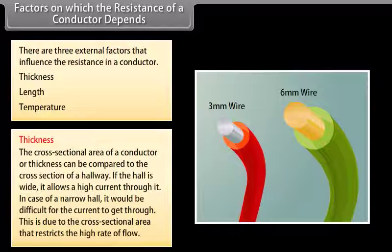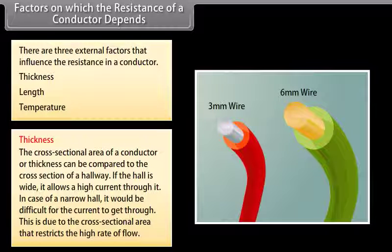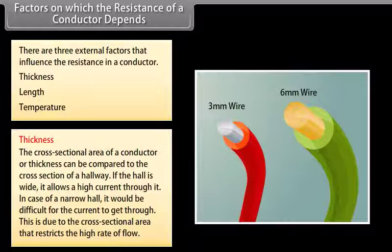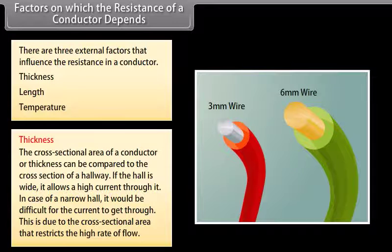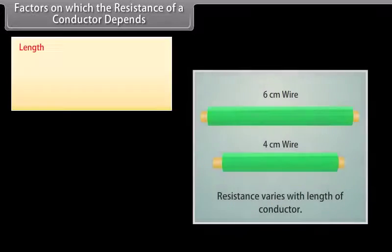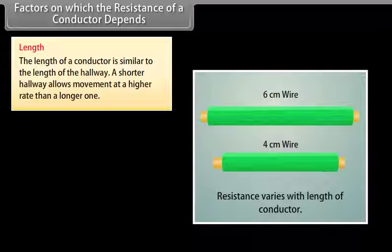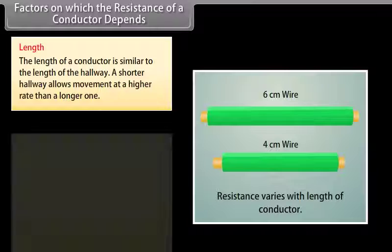The cross-sectional area of a conductor, or thickness, can be compared to the cross-section of a hallway. If the hall is wide, it allows a high current through it; a narrow hall makes it difficult for current to pass. Similarly, the length of a conductor is like the length of a hallway — a shorter hallway allows movement at a higher rate than a longer one.